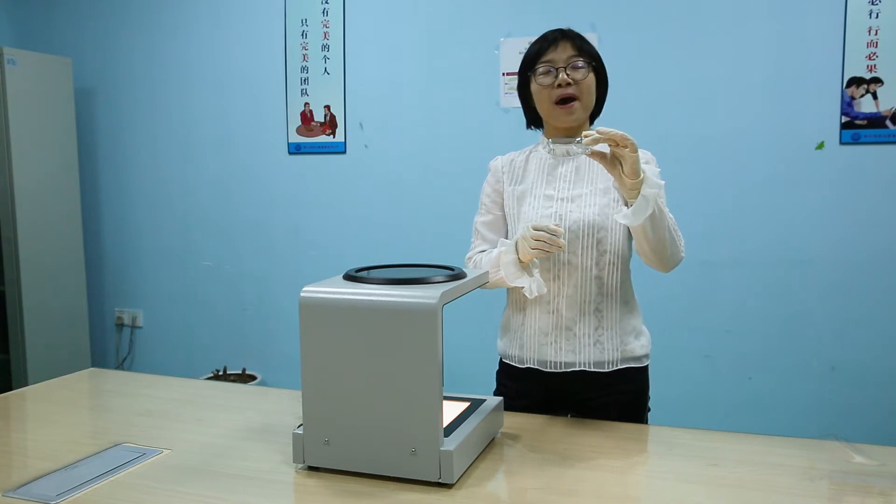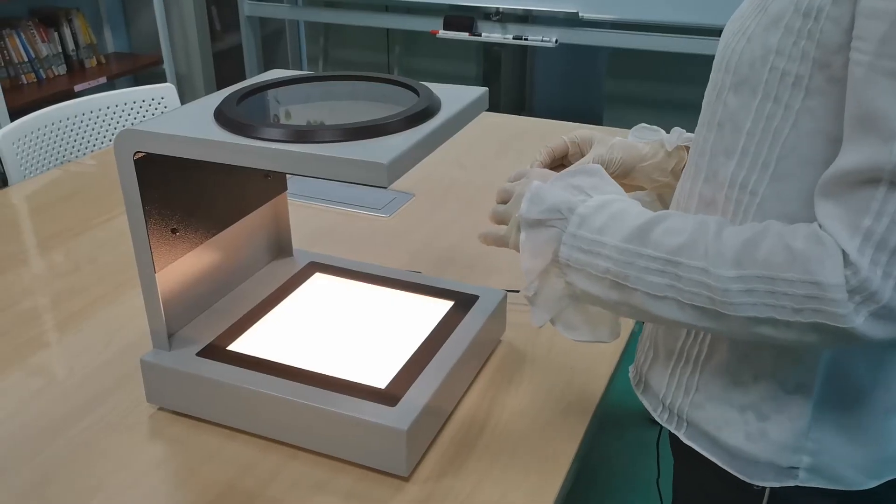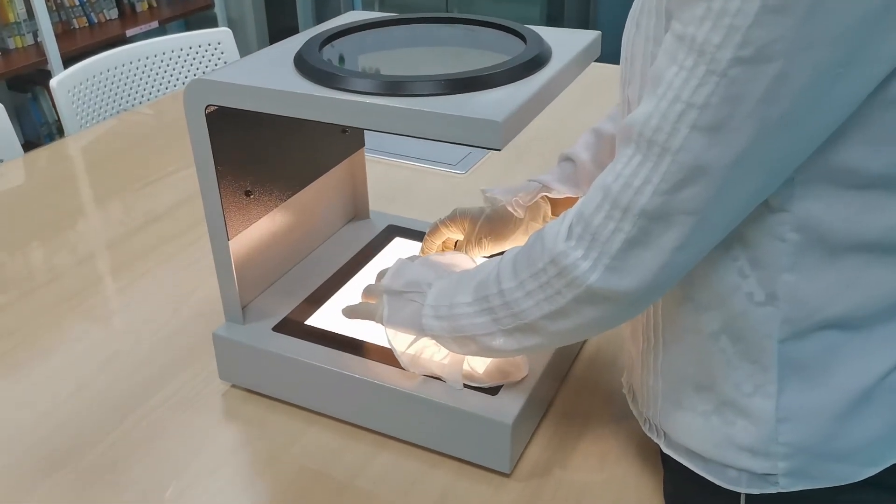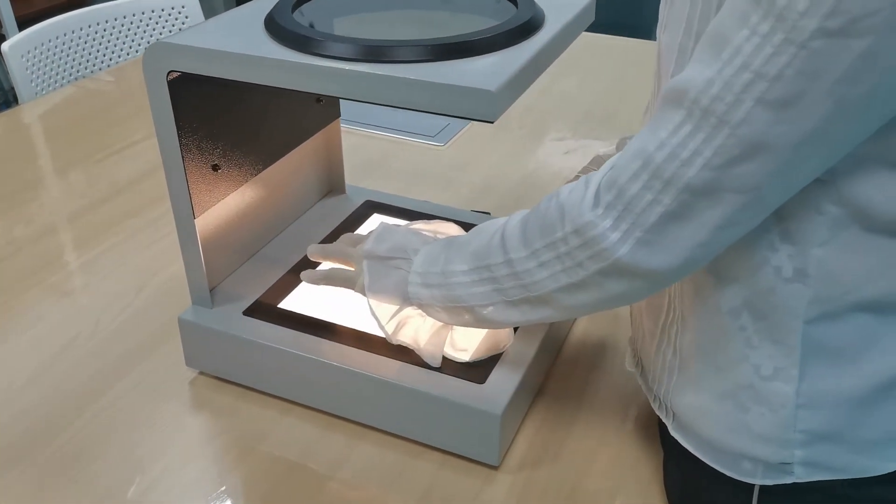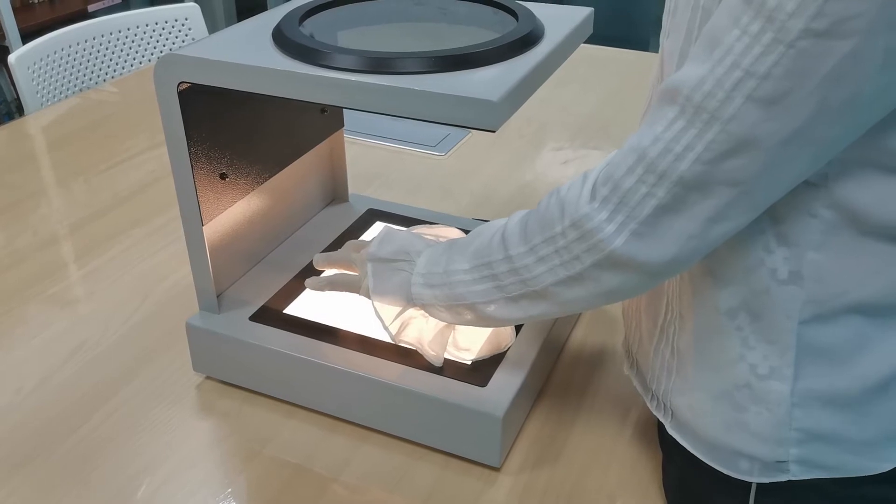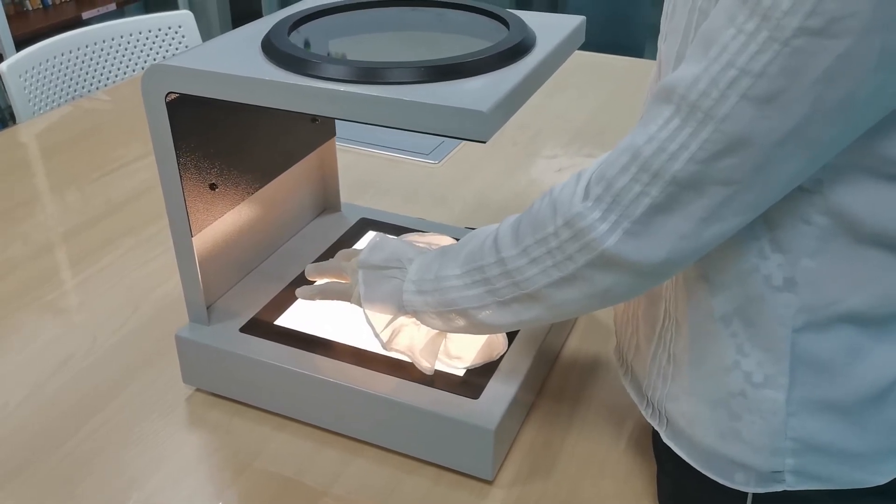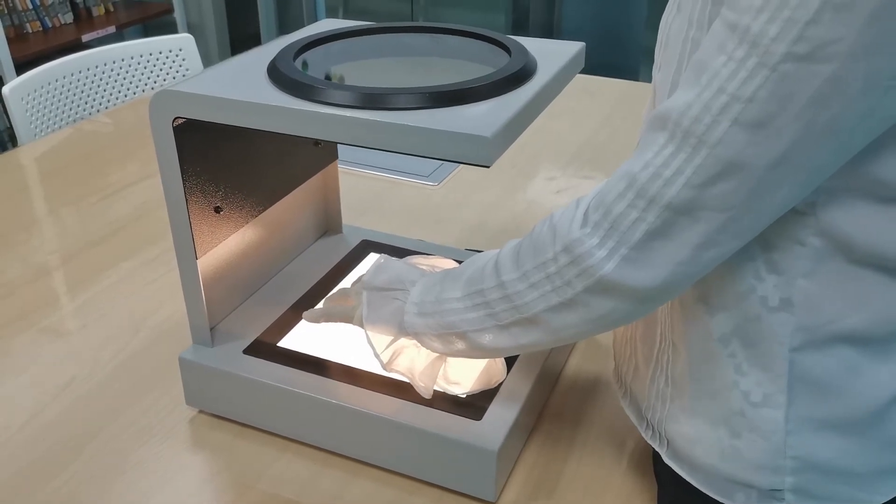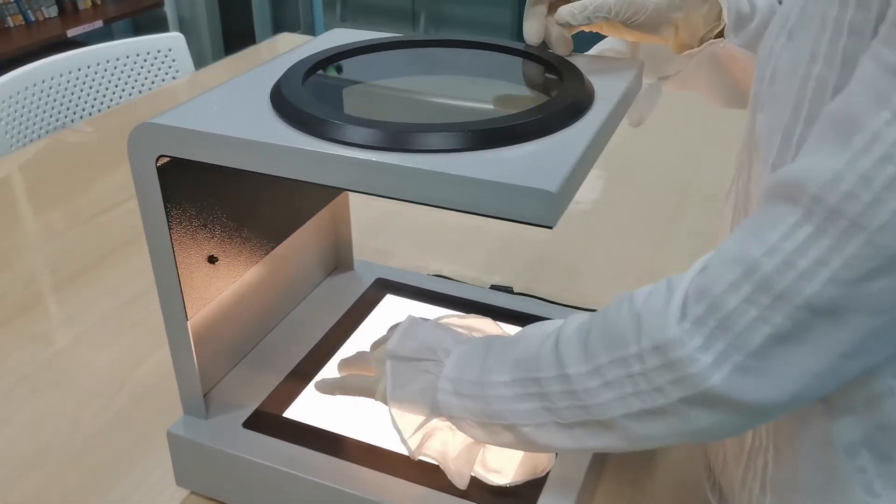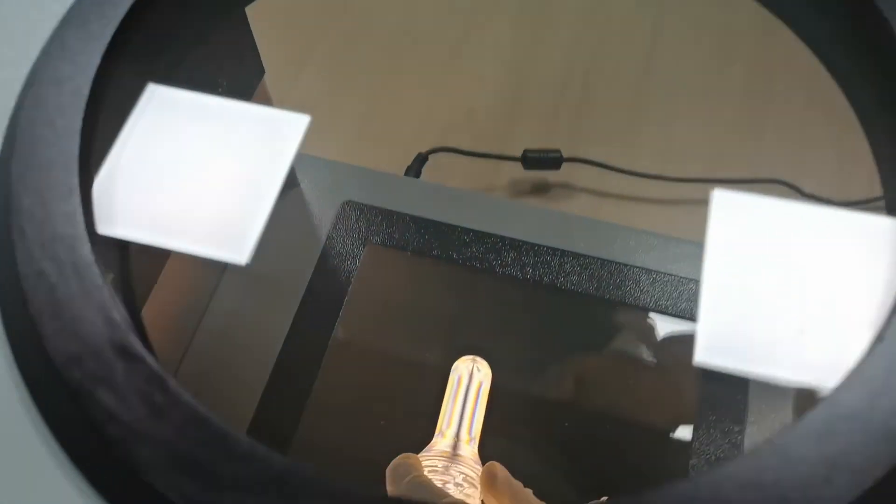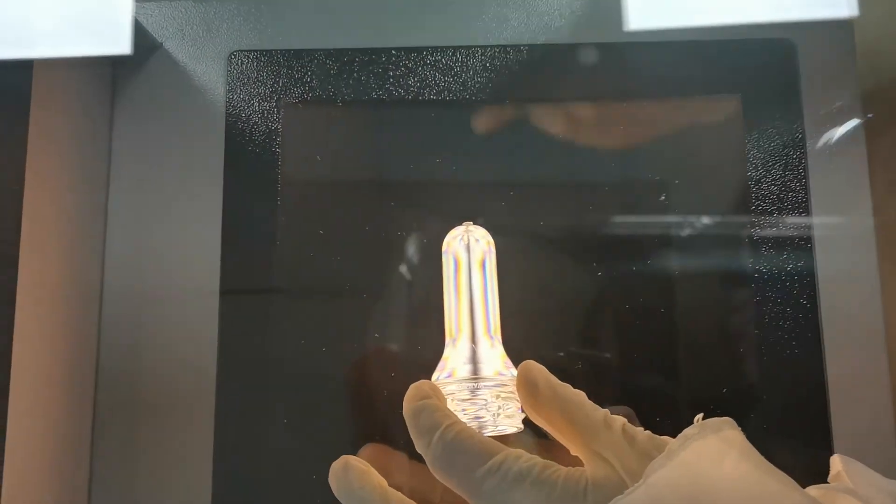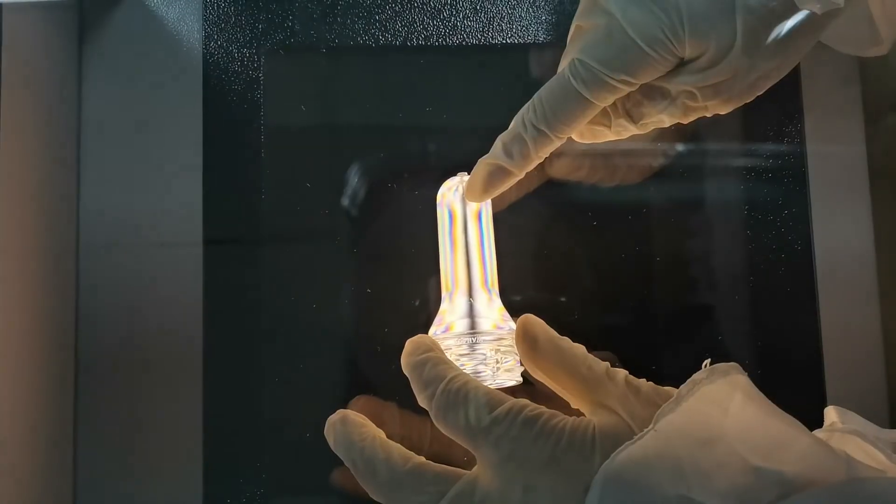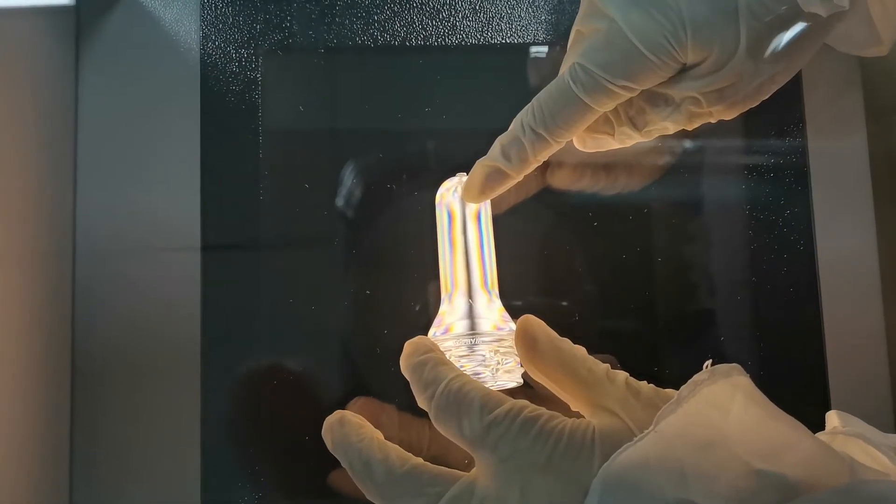But don't be cheated by your eyes. Let's put the PET preform on the sample plate. Now, this pretty preform is placed parallel to the polarizing axis. What will we see from the analyzer? Here, you can see a clear black fringe in the center of the preform.